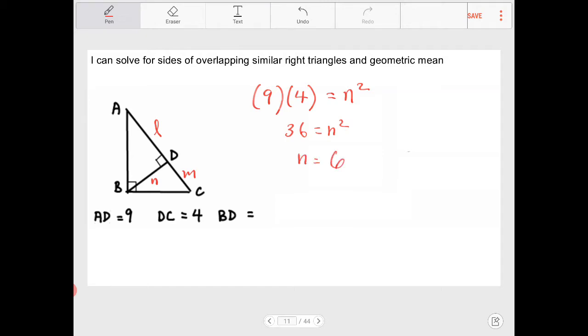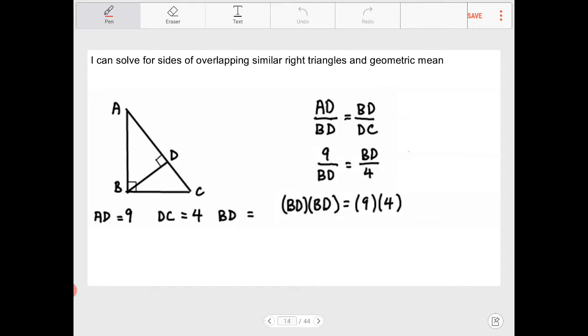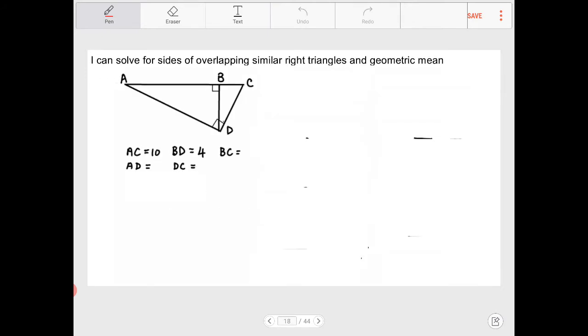N squared is equal to 36. What's N equal to? Oh yeah, that's 6, because square root of 36. So what's BD? BD is 6. Look how simple that was.